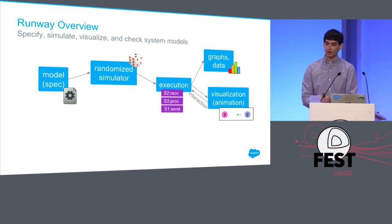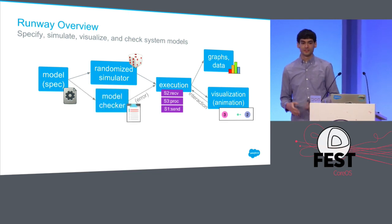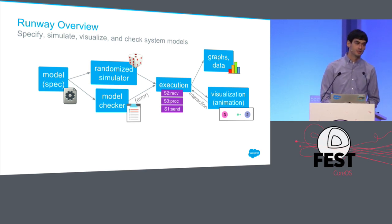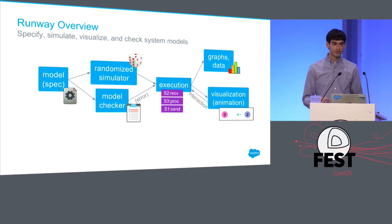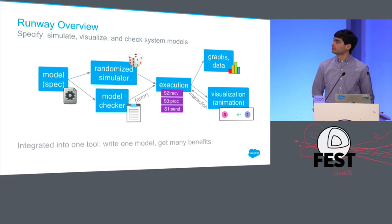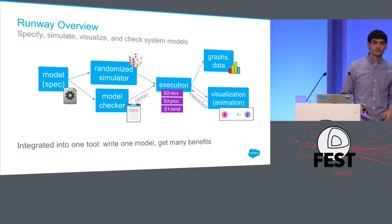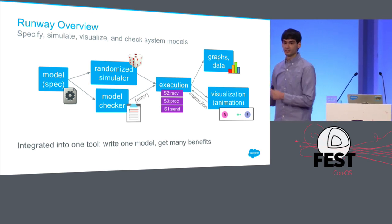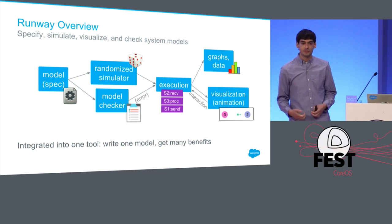You can also zoom into that data and watch individual visualizations to understand it. And you can take the same model and run it through a model checker, which brute-force explores the state space. If it finds an error — a state your model should never have reached — it gives you the exact execution of how you got there, shown visually so you don't have to dig through a log file. The key idea: write one model and get benefits in communication through visualization and spec, and evaluation through model checking and simulation.